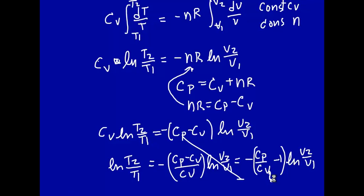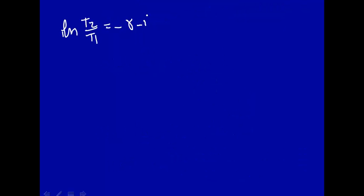Why are we using gamma? Well, that's what everybody else uses. So people use a symbol gamma, we'll define this to be equal to gamma, so this will be gamma minus 1, ln of V2 over V1.